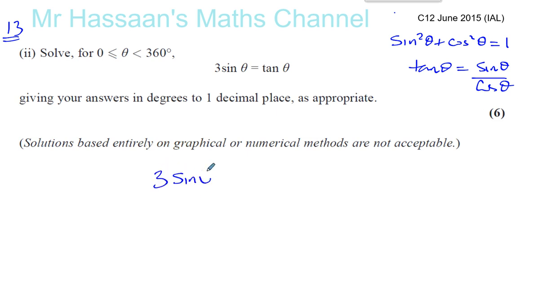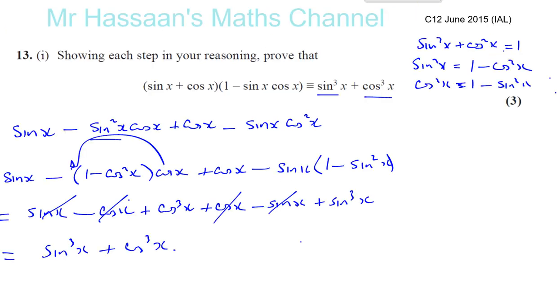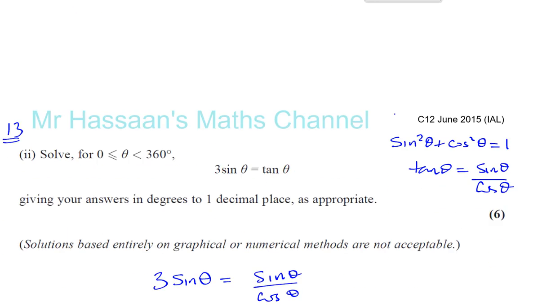So you have 3 sine theta equals, instead of tan theta, I'll write sine theta over cosine theta. And now let's get rid of the fraction, multiply both sides by cosine theta. So you can have 3 sine theta, cosine theta equals sine theta. Now, here there's no squares involved at all.